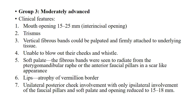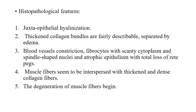Group 3: mouth opening is 15–25 mm. Trismus is seen. Vertical fibrous bands can be palpated and are firmly attached to underlying tissue. Unable to blow cheeks or whistle. On the soft palate, fibrous bands radiate from the pterygomandibular raphe or anterior faucial pillars in a scar-like appearance. Atrophy of the vermilion border is seen. In unilateral posterior cheek involvement, opening is reduced to 15–18 mm. Histopathologically, juxta-epithelial hyalinization is seen, thickened collagen bundles with edema, blood vessel constriction, fibrocytes with scanty cytoplasm and spindle-shaped nuclei, atrophic epithelium with loss of rete pegs, and muscle fibers interspersed with thickened dense collagen fibers with muscle fiber degeneration.